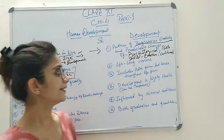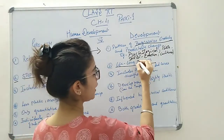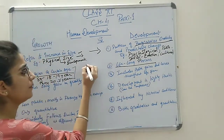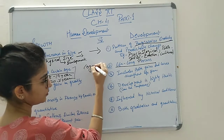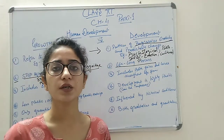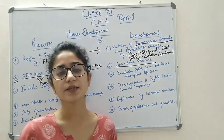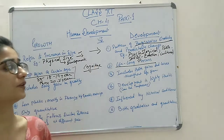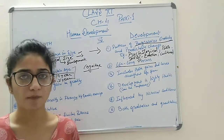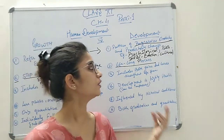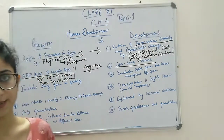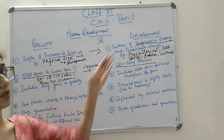Whereas if we talk about development, it is a lifelong process. Here we are getting an increase in knowledge — whether it is related to your cognitive development. Cognitive development includes reasoning, knowledge related to language, communication skills, and other activities. As we grow older, development does not stop. Your social circle increases, your thinking abilities increase, and every experience you gain is considered part of development.